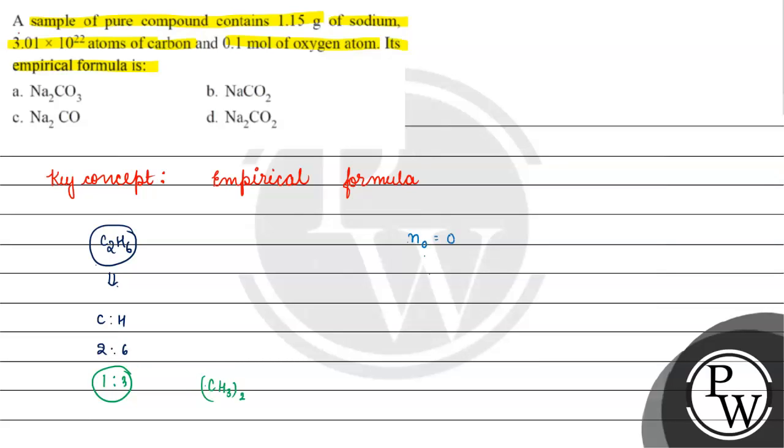We have number of moles of oxygen atoms given as 0.1 mole. Number of moles of carbon atoms will be number of atoms of carbon, that is 3.01 into 10 to the power 22 by 6.02 into 10 to the power 23. Number of atoms by Avogadro's number will give us basically 1 by 2 into 10 to the power minus 1, which is 0.05 moles.